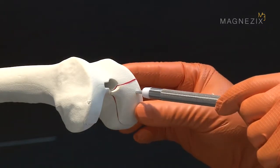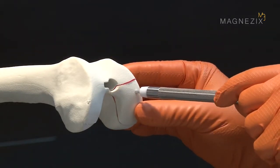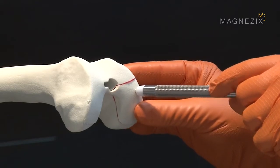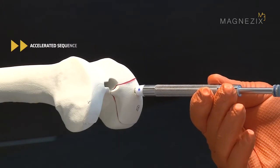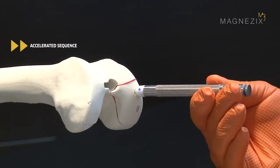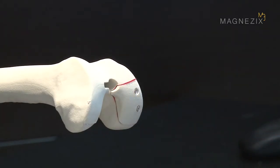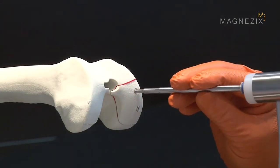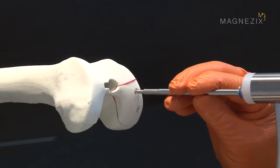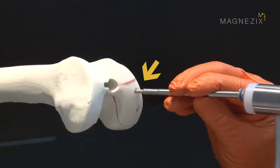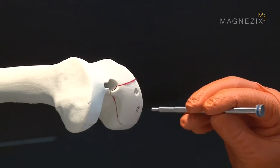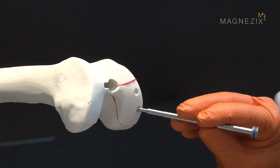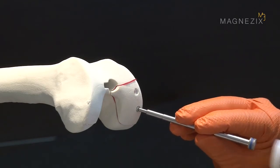The impactor sleeve protects long pins in particular against bending. We therefore recommend that you use the impactor. In some cases, the pin has to be countersunk. The impactor insert is used for this. The recess in the head of the pin helps position the insert centrally and reduces the risk of the insert slipping off the pin head.